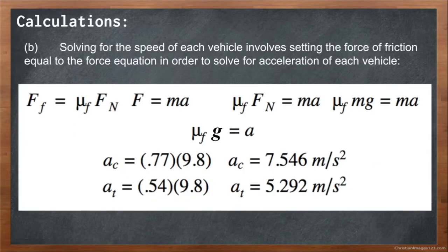Part B asks us to solve for the speed of each vehicle just after the collision. This involves setting the force of friction equal to the force equation in order to solve for acceleration of each vehicle after the collision. By doing this, we get the coefficient of friction times normal force equals mass times acceleration. When we rewrite the normal force as mg, we can cancel out the masses on either side of the equation and get that the coefficient of friction times gravity equals acceleration.